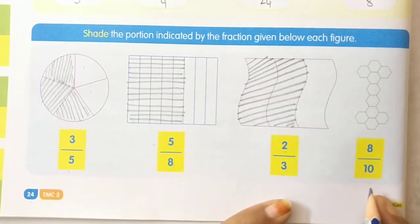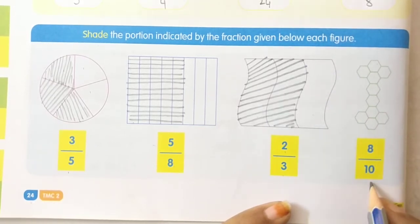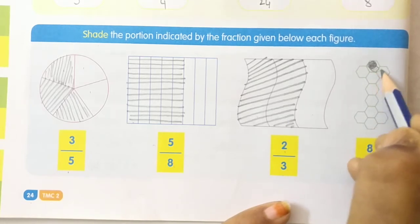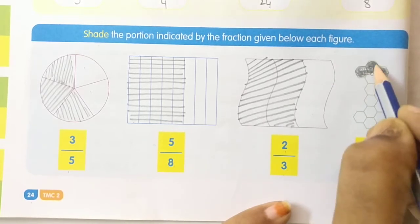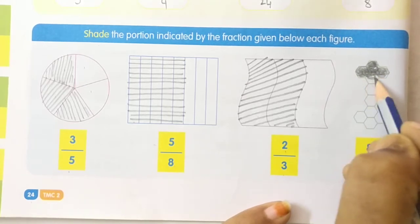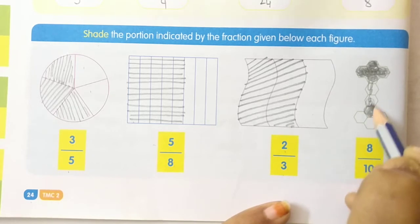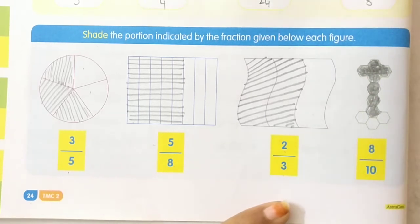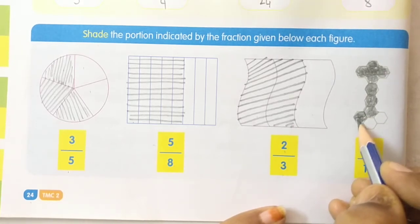Now come to the next one. How many parts do you have? 10 parts — count: one, two, three, four, five, six, seven, eight, nine, ten. Total 10 parts. Now how many parts do I have to shade? Eight parts. So now shade eight parts children. Total eight parts are completed.